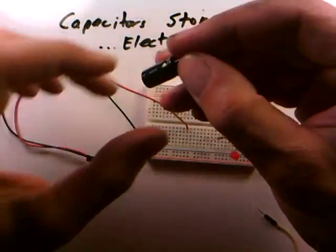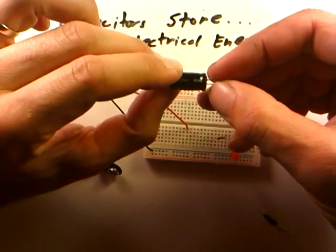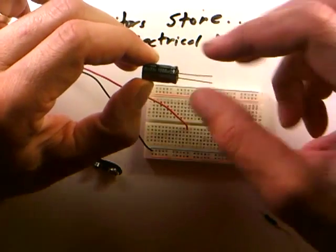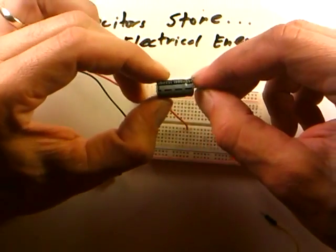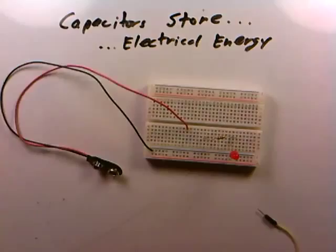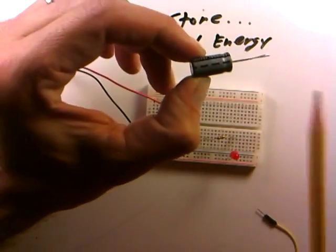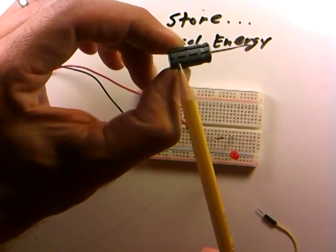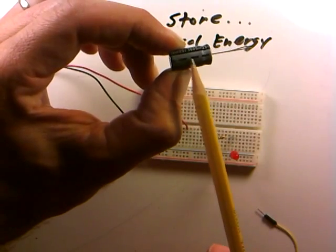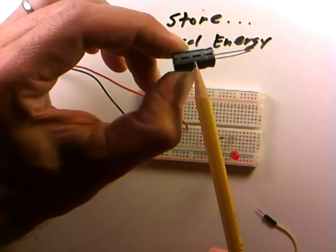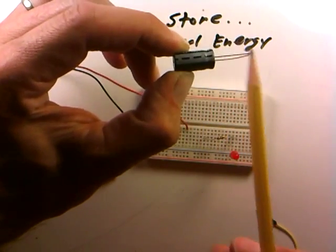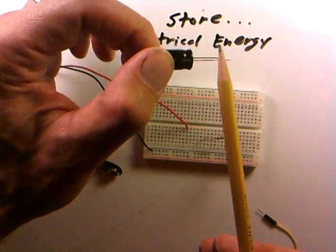So, just to point out, these electrolytic capacitors, which we'll be using quite a bit, they are polarized. That means they have to be put in the circuit in a particular way. The way you can tell is by looking very carefully at the markings on the case here. This one has this big white stripe with all these dashes in it. The dashes mean minus for negative. So, this is the more negative lead, and the other one would, of course, be positive.